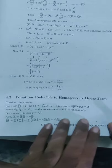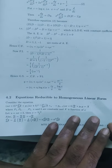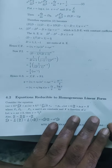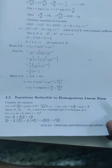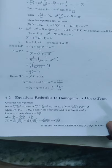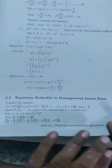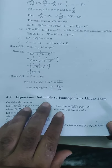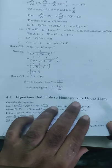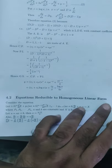Welcome FYBS students. Today we are going to discuss Paper 1: Ordinary Differential Equations, Unit 4 — the topic: Equations Reducible to Homogeneous Linear Form.